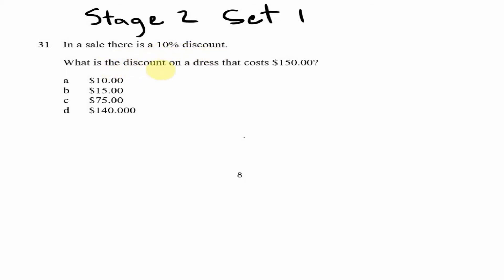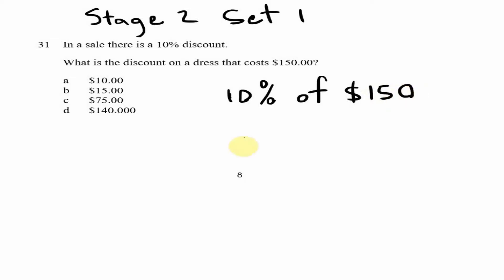Looking at question 31: in a sale there is a 10% discount. What is the discount on a dress that costs $150? The discount simply means the amount that will be taken off the cost of the dress. The discount is 10% of the cost of the dress, which is $150.